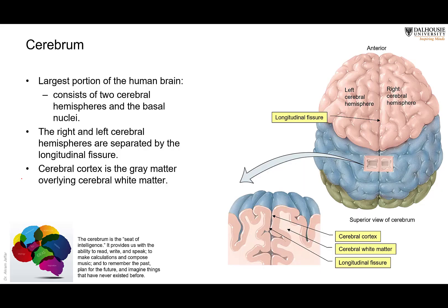This is the largest portion of the human brain. It consists of two cerebral hemispheres — this is one here and here's the other one.